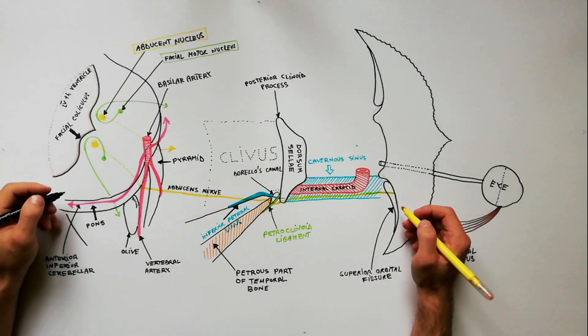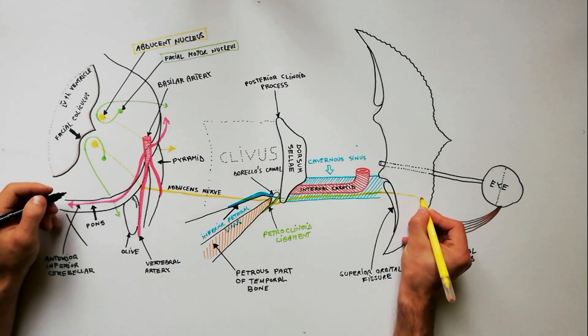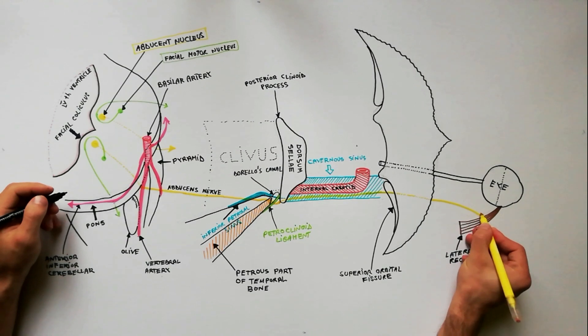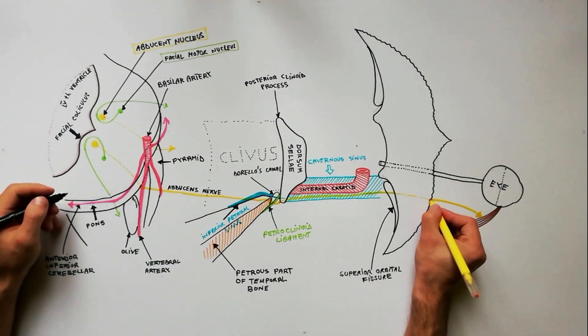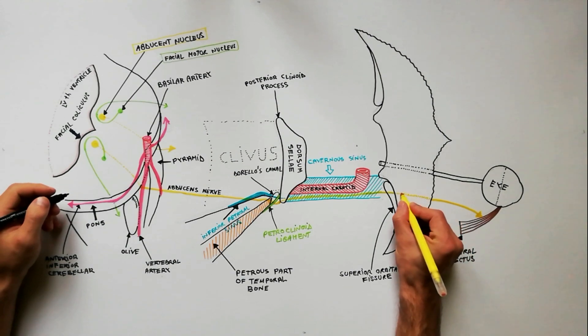The nerve enters the orbit through the superior orbital fissure. In the orbit, it runs forward toward the lateral side to enter the orbital surface of the lateral rectus muscle, which it supplies.